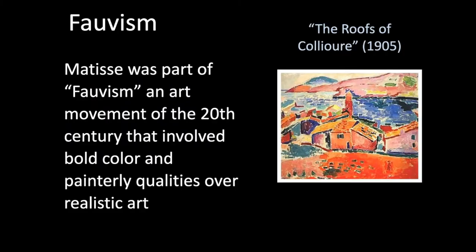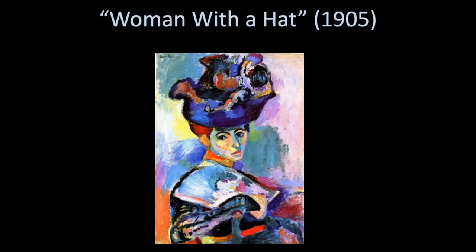Fauvism is an important art movement. It was part of the 20th century and it involved bold color and painterly qualities over realistic art. The Fauvism art movement showed very bold and bright colors, which did not represent what you could see with your own eye in real life.